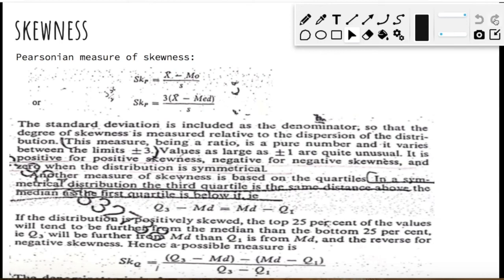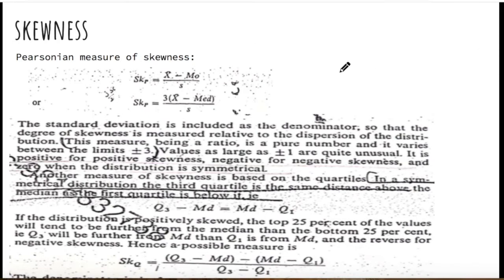In the last class we completed our discussion on the topic of dispersion. Today we are going to start with another important aspect of data analysis called skewness. We have looked at this concept before, but today we are going to talk about it in greater detail.